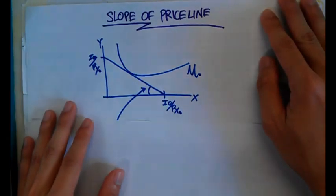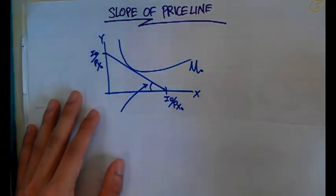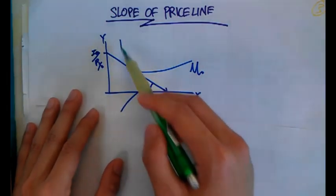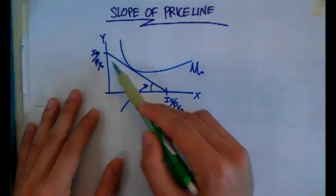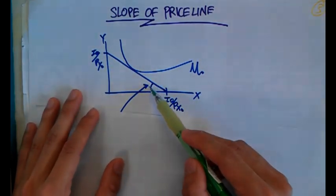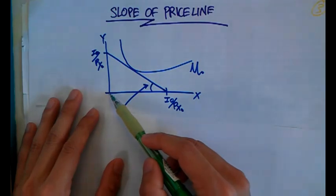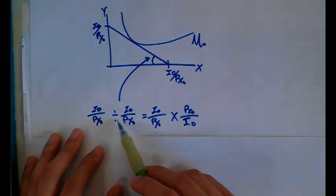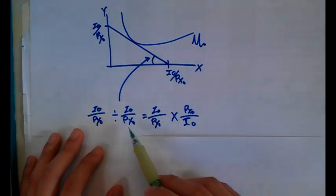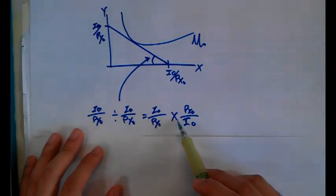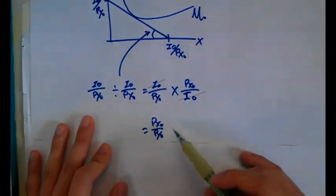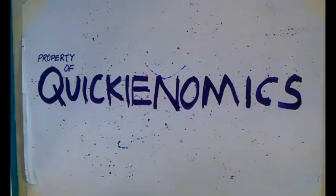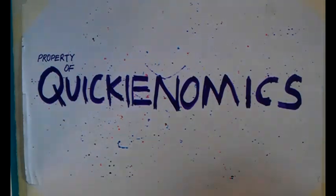Let's talk about the slope of the price line. We have real income in terms of X on one axis and real income in terms of Y on the other, with the indifference curve shown. The gradient of the budget constraint (price line) is the vertical distance divided by the horizontal distance: (I₀/Py₀) ÷ (I₀/Px₀). The I₀ terms cancel, giving us Px₀ over Py₀ as the slope of the price line.